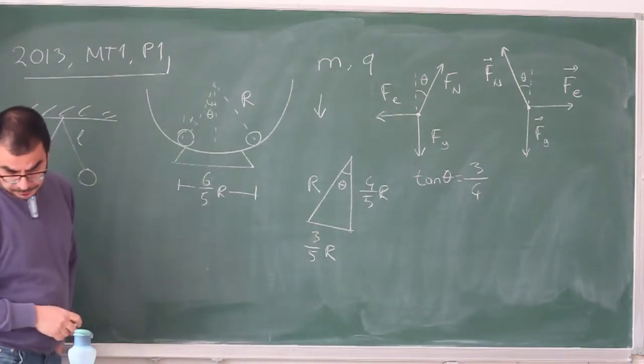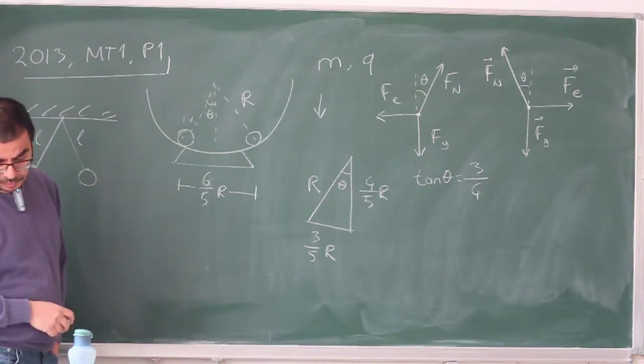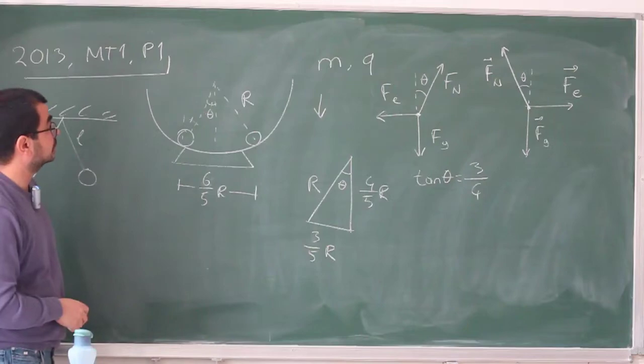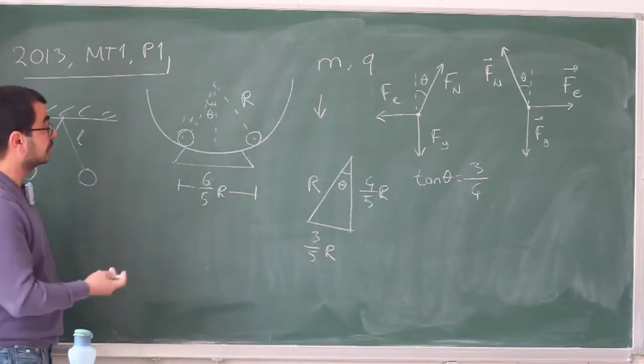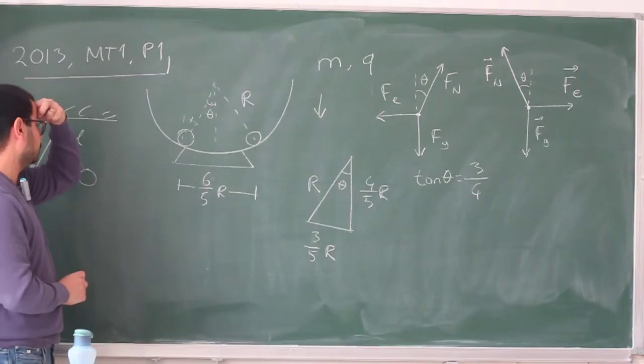Then they're asking for the charge in terms of the other quantities, R, G, and so on and so forth. So given this configuration, how would you calculate the charge? Now to do this, we need to relate the electric force to gravitational force.